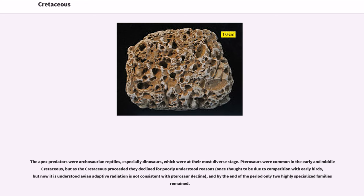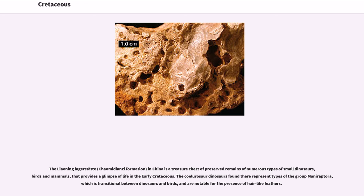The apex predators were archosaurian reptiles, especially dinosaurs, which were at their most diverse stage. Pterosaurs were common in the early and middle Cretaceous, but as the Cretaceous proceeded they declined for poorly understood reasons — once thought to be due to competition with early birds, but now understood that avian adaptive radiation is not consistent with pterosaur decline — and by the end of the period only two highly specialized families remained. The Liaoning Lagerstätte (Jiufotang Formation) in China is a treasure chest of preserved remains of numerous types of small dinosaurs, birds and mammals. The coelurosaur dinosaurs found there represent types of the group Maniraptora, which is transitional between dinosaurs and birds, and are notable for the presence of hair-like feathers.